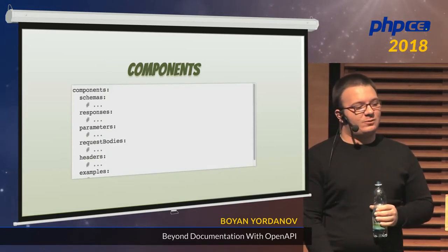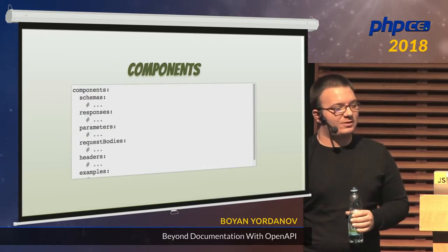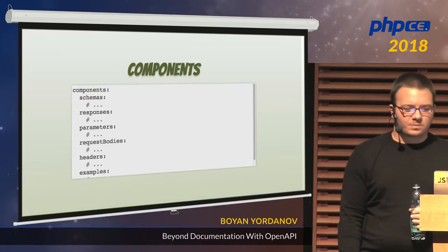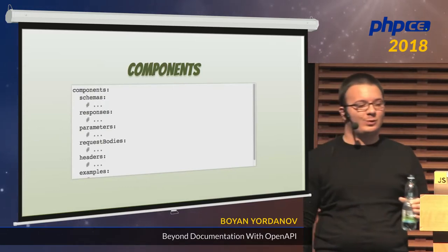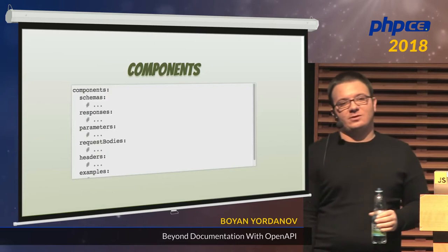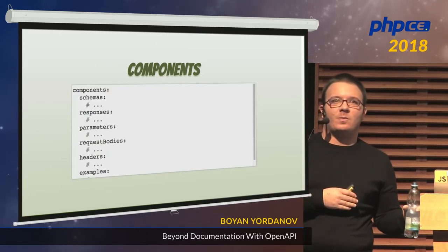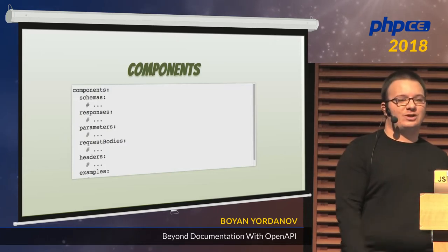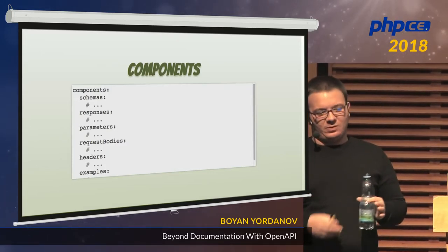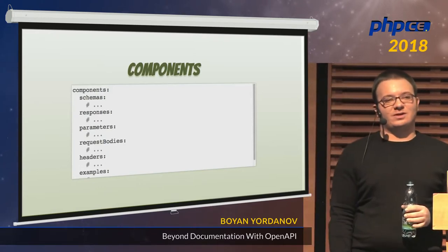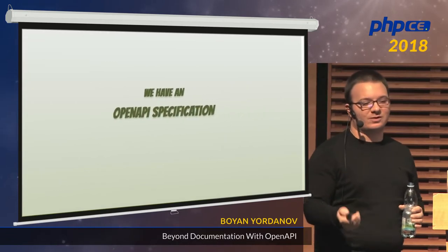They have defined a place where you can store reusable components if you don't want to split them into different files in the beginning. You can have schemas, responses, whole request bodies, and examples. The examples are usually just what you expect the schema to generate in the end — the real JSON data — and you can even add code examples here that can be displayed in the docs later.